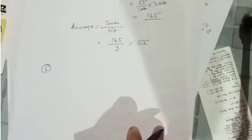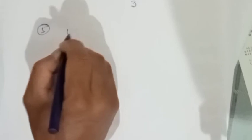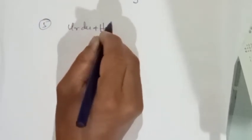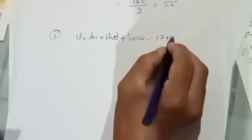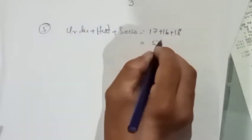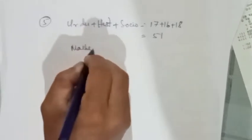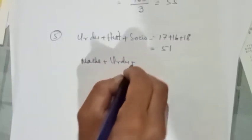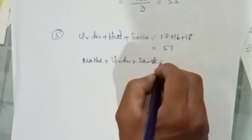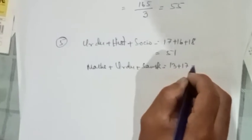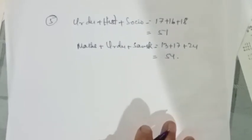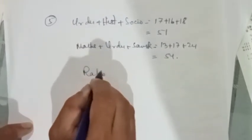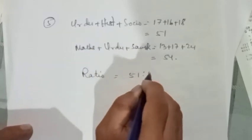Here is the percentage of Urdu, History, and Sociology. Let's check the ratio of Urdu, History, and Sociology. The number of students can be calculated from their percentages. Let's check the answer for the ratio of Urdu and History.